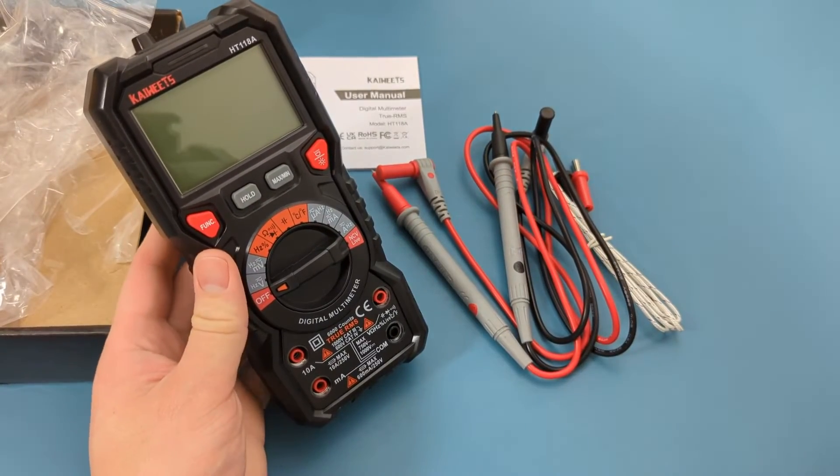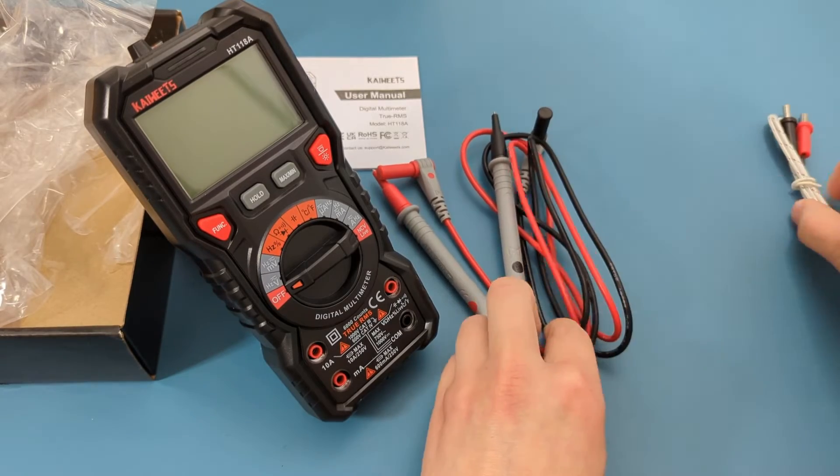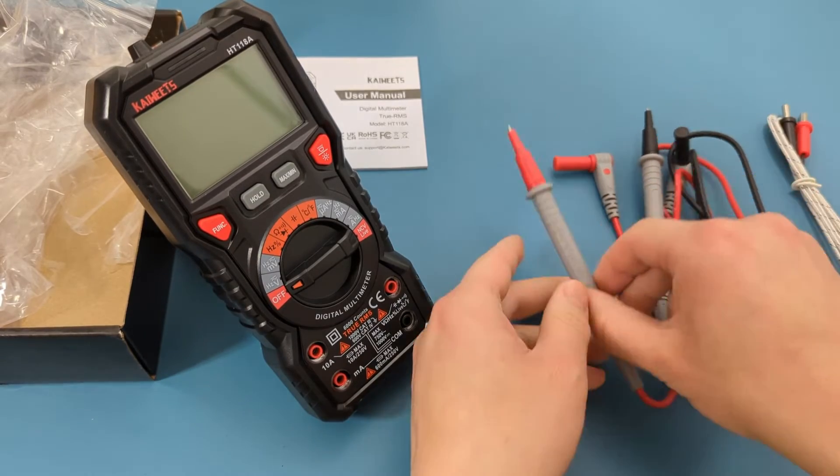Connect the probes into the multimeter. The black probe goes into the COM port, and the red probe goes into the voltage and ohm port.